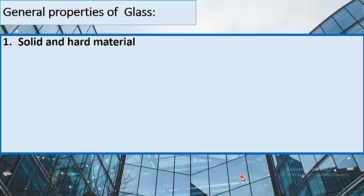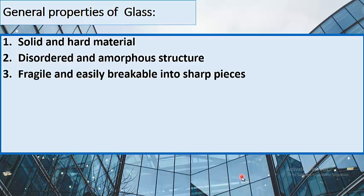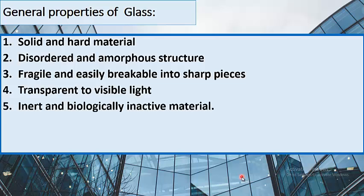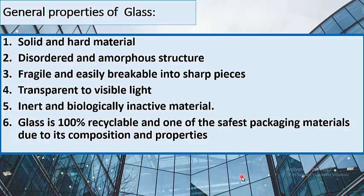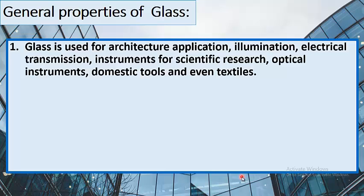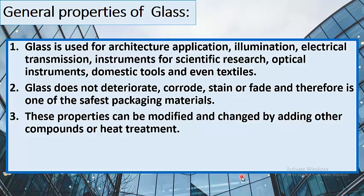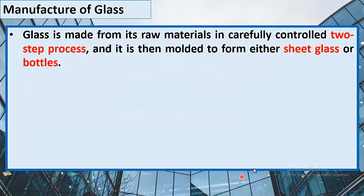General properties of glass: it is a solid and hard material with a disordered and amorphous structure; fragile and easily breakable into sharp pieces; transparent to visible light; inert and biologically inactive. Glass is 100% recyclable and one of the safest packaging materials. Its properties can be modified by adding other compounds or through heat treatment.